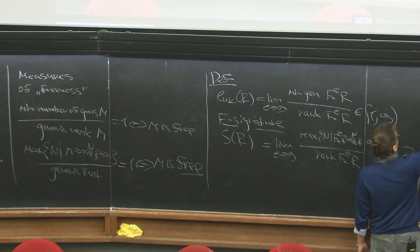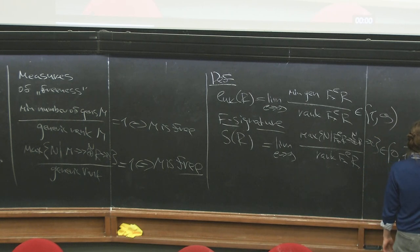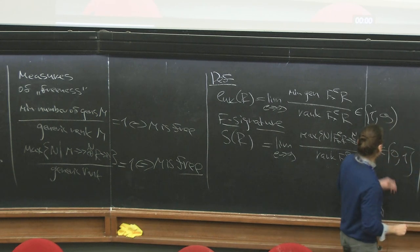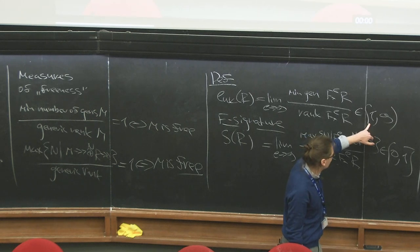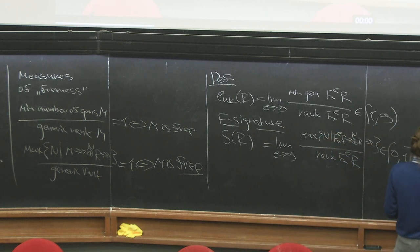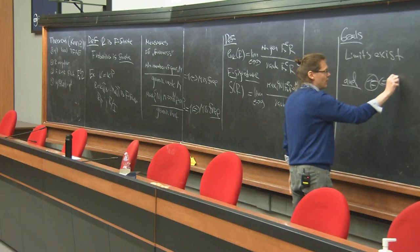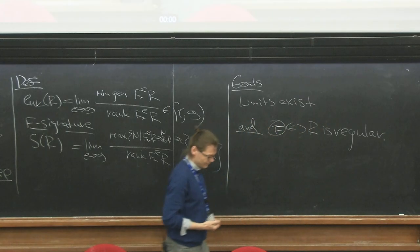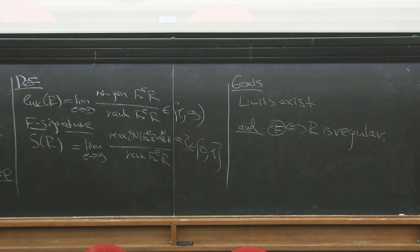The limits exist, and the special value 1 — which is the smallest possible value for Hilbert-Kunz multiplicity and the largest possible value for f-signature — equals 1 if and only if R is regular. If we have time left, we'll discuss additional properties, but the minimal program for the four lectures is to discuss those results.